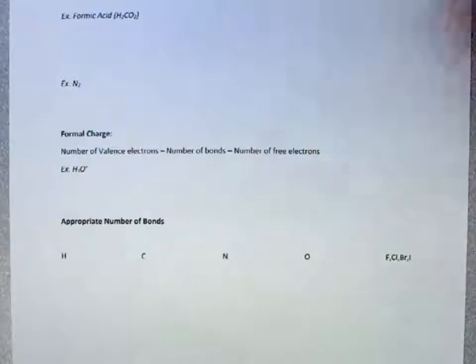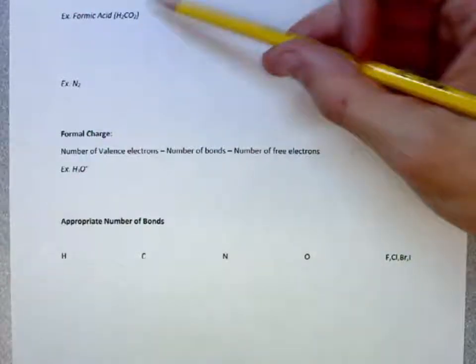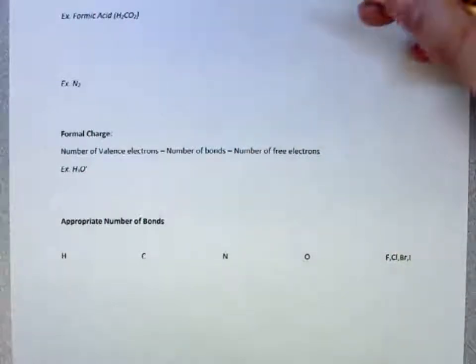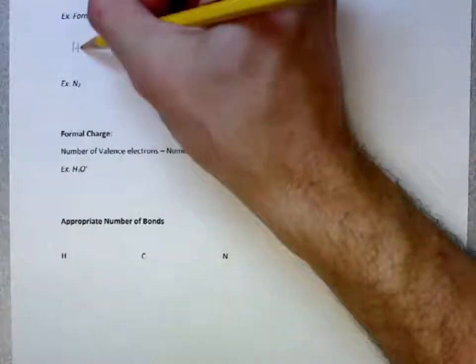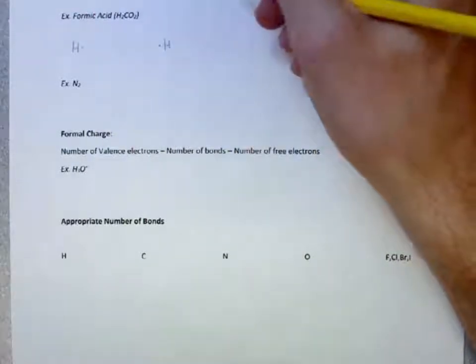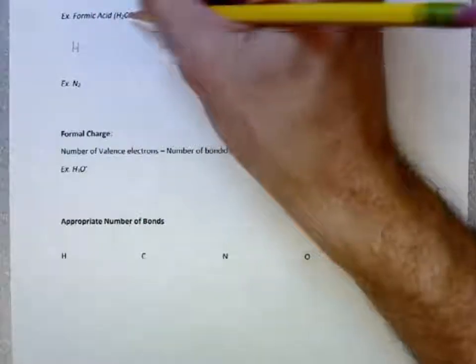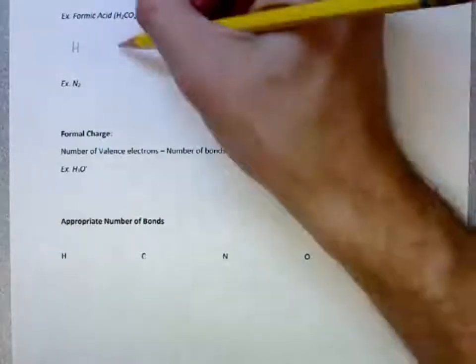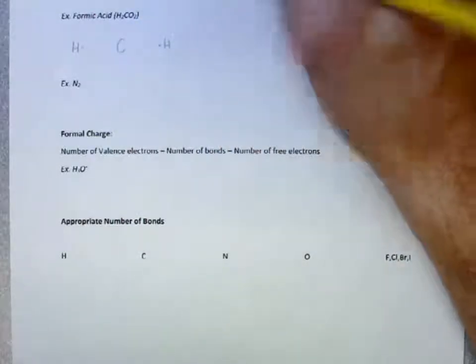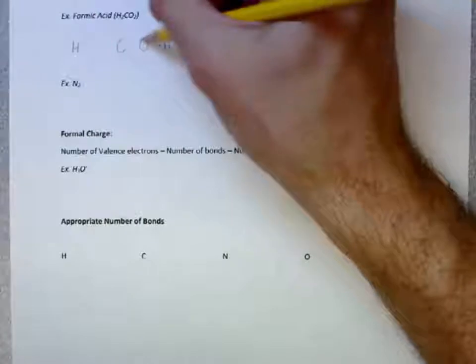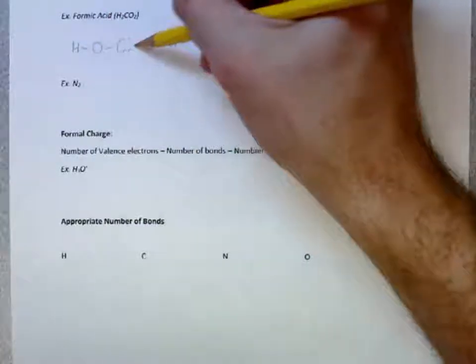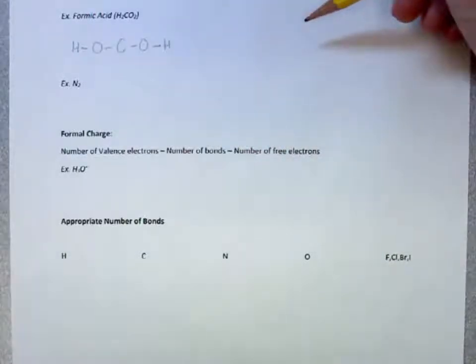If we look at a different structure, formic acid, which has a structure H2CO2. We have H has 1 valence electron. And we have carbon with 2 oxygens. Now, we can choose to put carbon in the center. And let's say we put the oxygens between the H's here. And then let's draw our bonds.